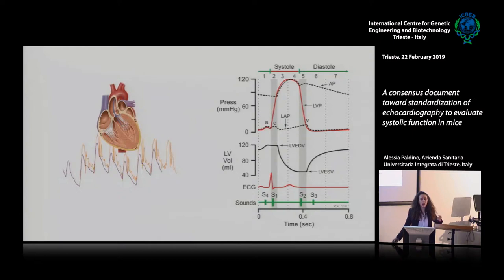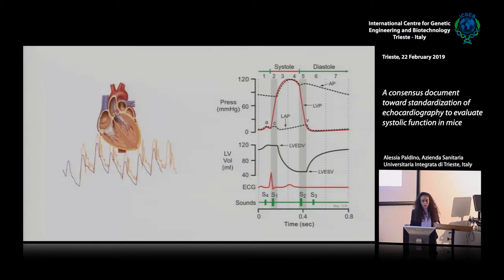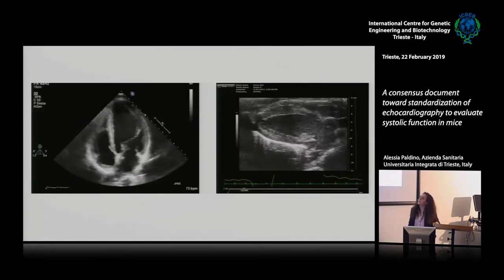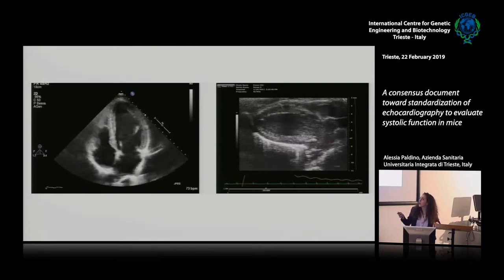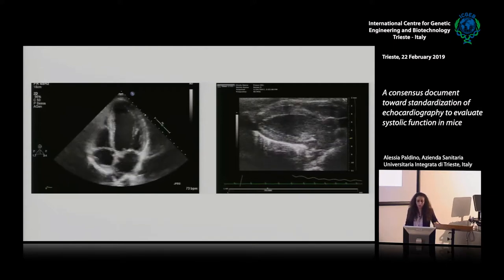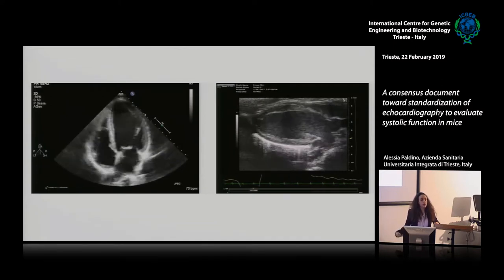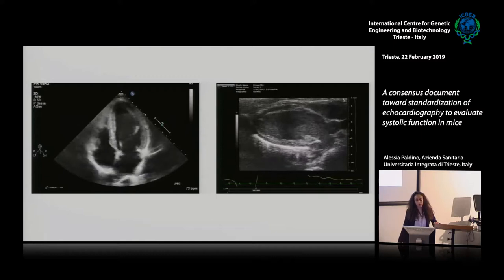To do this, it would require a micromanometer inside the left ventricle, which is not usually possible in the clinical scenario or in the laboratory setting. So we need some less invasive or non-invasive technique to evaluate systolic function. We are talking about echocardiography. Echocardiography is a reliable technique that can be used for evaluating systolic function in the clinical scenario, as we can see from human echocardiography. With the variation of the left ventricle volumes, we can indirectly measure the systolic function, and the ejection fraction is the most used parameter.